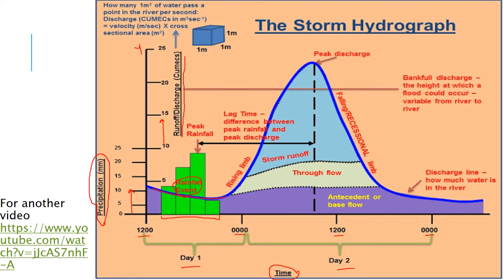Down here we've got base flow — this is normally what we expect the river to be doing. However, because we've had this rainfall event, the river is going to massively increase its discharge. There's been a time delay from the peak rainfall to the peak discharge — that's called the lag time. This blue line refers to the river discharge as a result of the rainfall event.